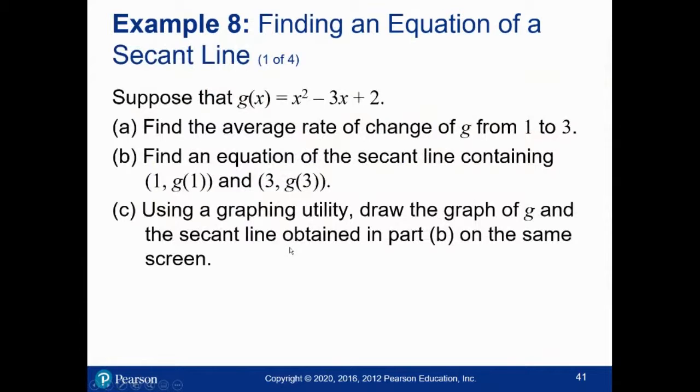All right, so an example. Suppose that G of X is X squared minus 3X plus 2. Find the average rate of change from 1 to 3. Find an equation of the secant line containing those points and then graph all of this.